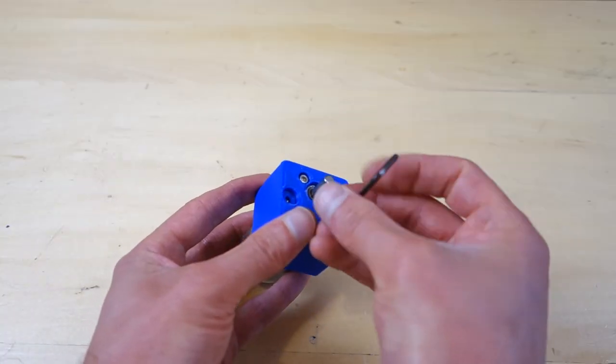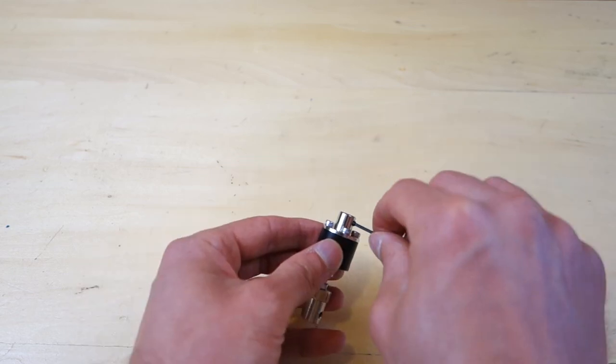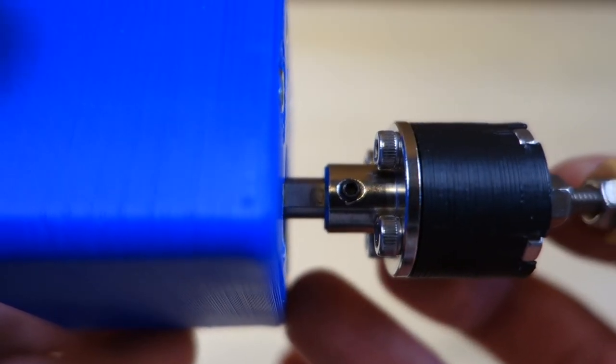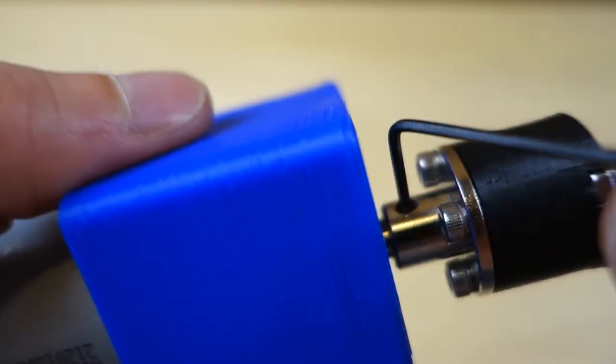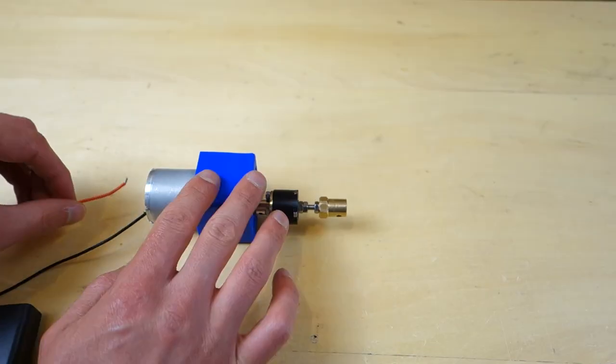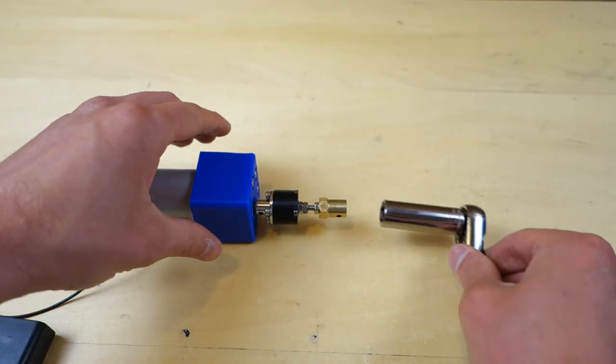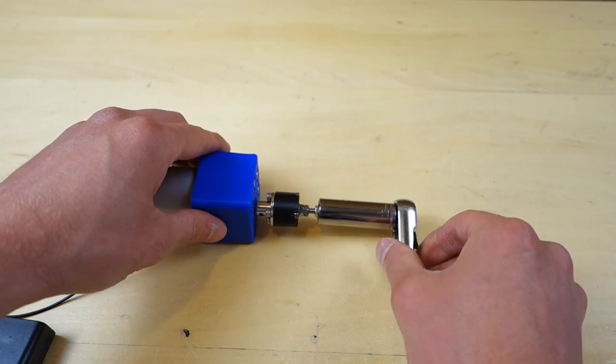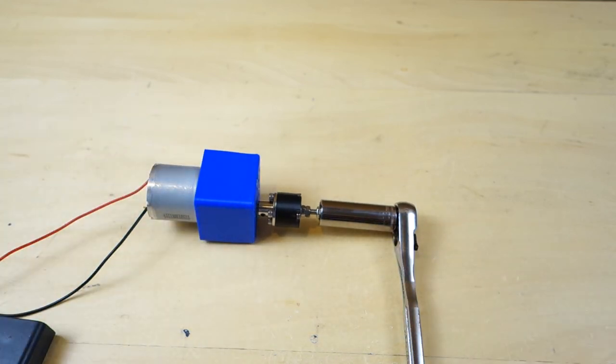First, install the motor into the mount. Then, slip the torque limiting coupling into the motor shaft. Now, tighten the set screw against the flat on the motor shaft. Then, connect the motor to the battery pack. And now, attach a wrench to the torque limiting coupling. Lay it on one side of the table. Power the motor.